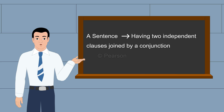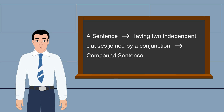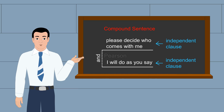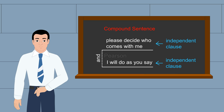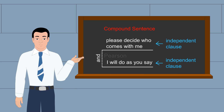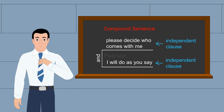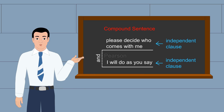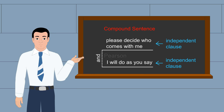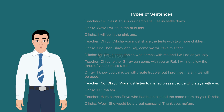A sentence containing two main clauses joined together by a conjunction is called a compound sentence. When you add one statement to another with conjunctions — here, Diksha says, 'Ma'am, please decide who comes with me and I will do as you say.' There are two clauses: 'Ma'am, please decide' and 'I will do as you say.' They are joined by the conjunction 'and.'